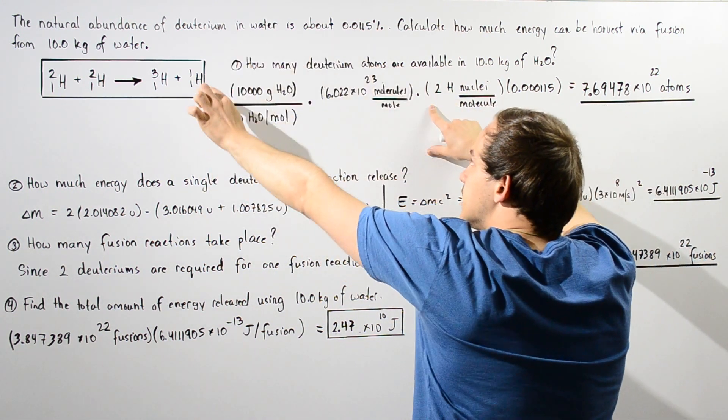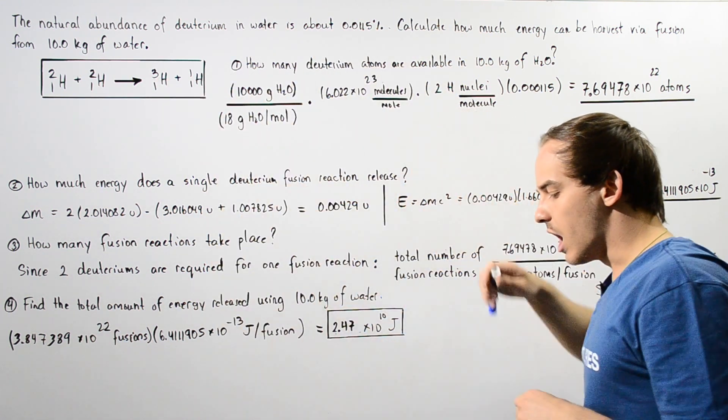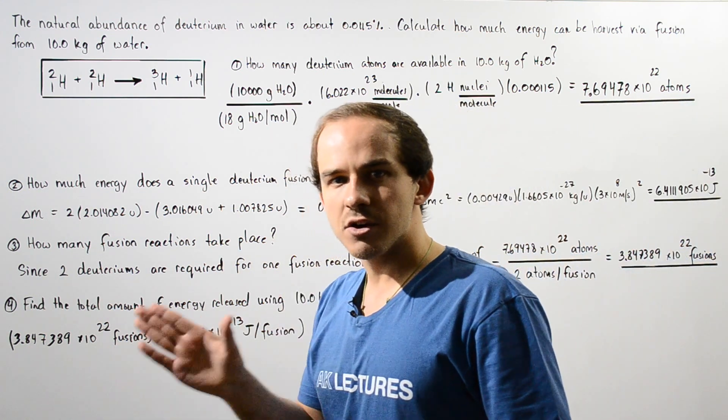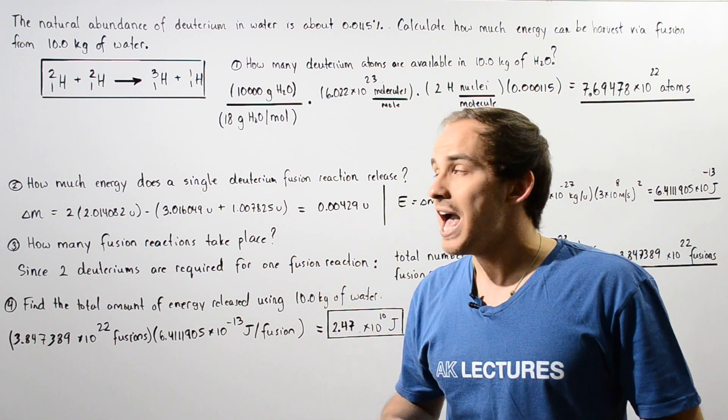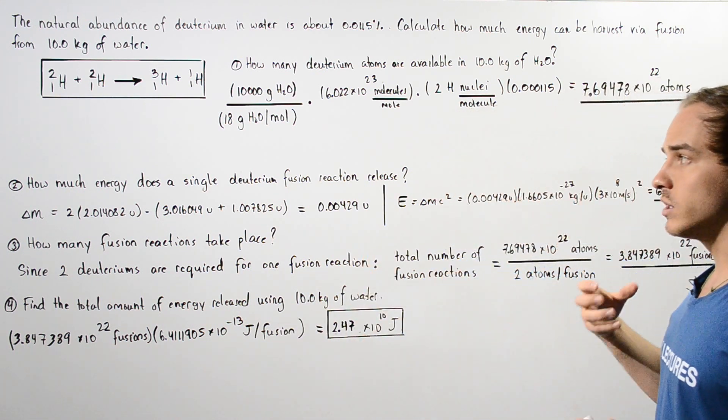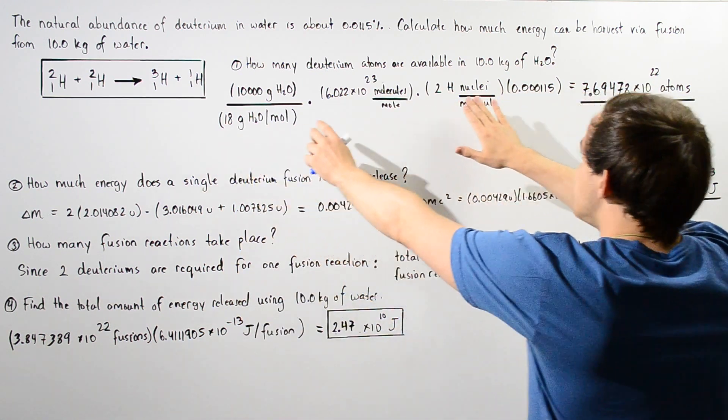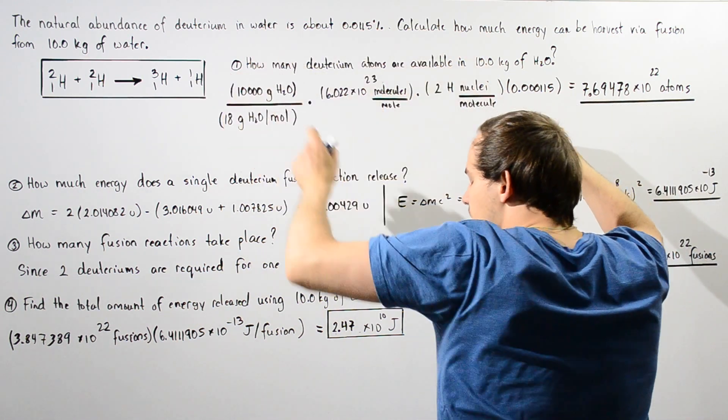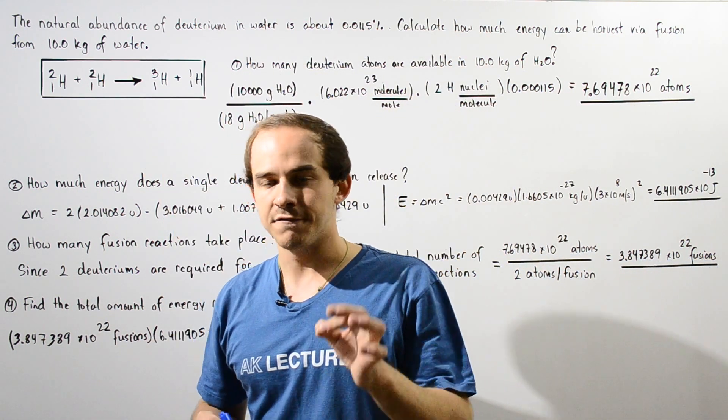So this gives us the number of molecules of water we have in 10 kilograms of water. But we are not actually interested in the water. We are interested in our hydrogen atoms. And a single water molecule contains two hydrogen atoms. So we multiply this by 2.